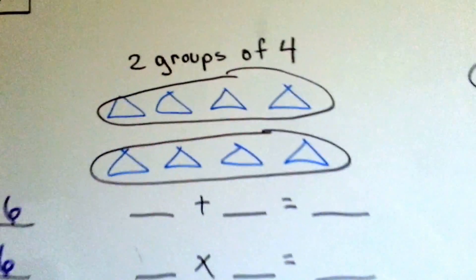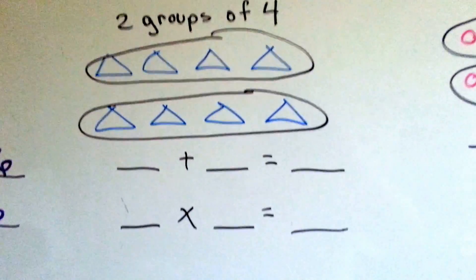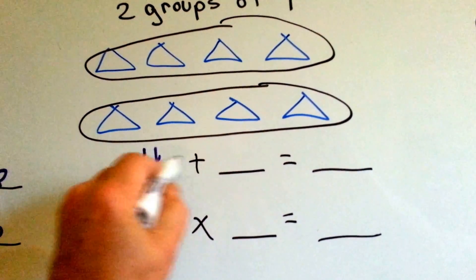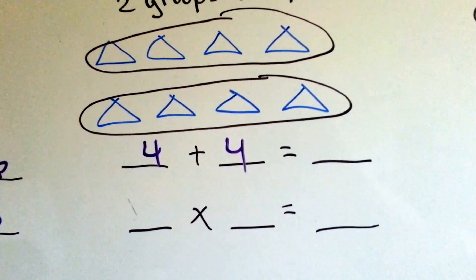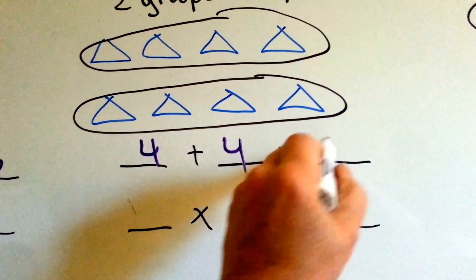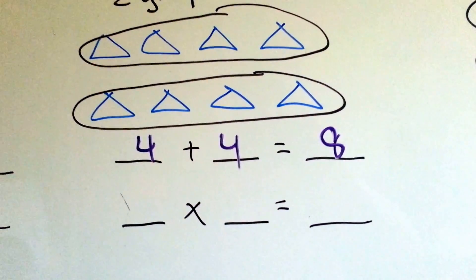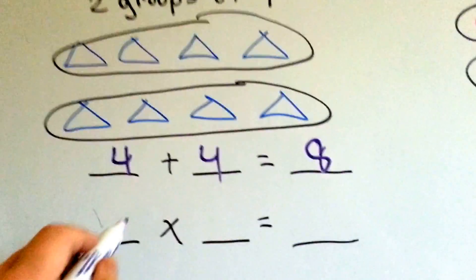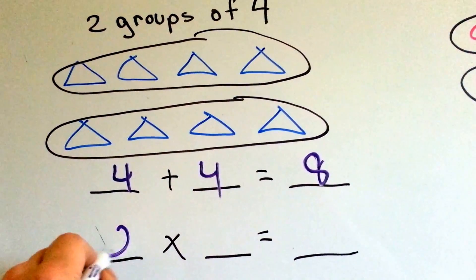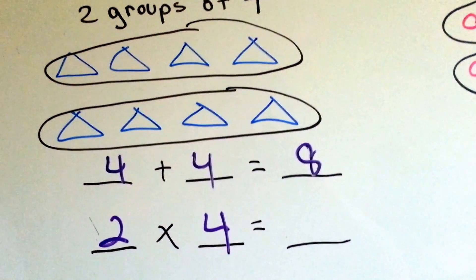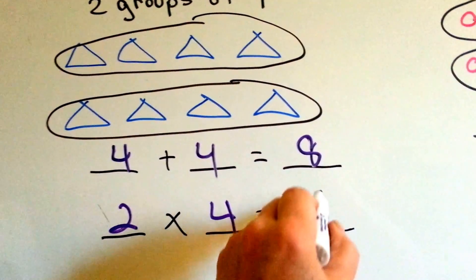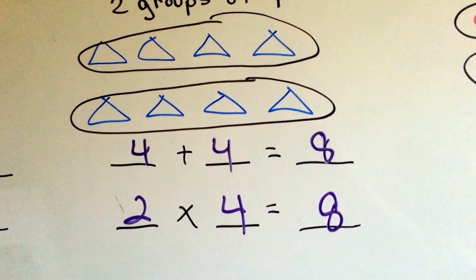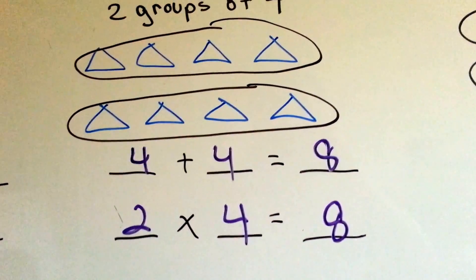Let's look at this one. We have 2 groups of 4. That's 4 plus 4. 4 plus 4 equals 8. We have 2 groups of 4 — that's 2 times 4. 2 times 4 is 8. So 4 plus 4 and 2 times 4 are the same thing.